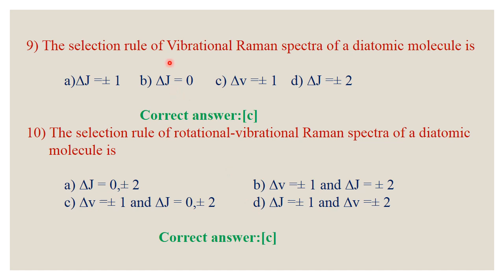Question number 9: The selection rule for vibrational Raman spectra of a diatomic molecule. For vibrational Raman spectra, delta ν = ±1. For rotational Raman spectra, delta J = 0 or ±2. The selection rule for vibrational-rotational Raman spectra is delta ν = ±1 and delta J = 0 or ±2. The correct answer is C.